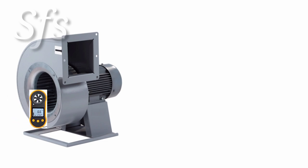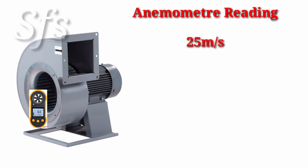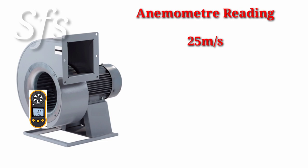What we have to do first is put the anemometer near the suction point and take a reading. Suppose the anemometer gives a reading of 25 meter per second. That means the velocity of air near suction is 25 meter per second.